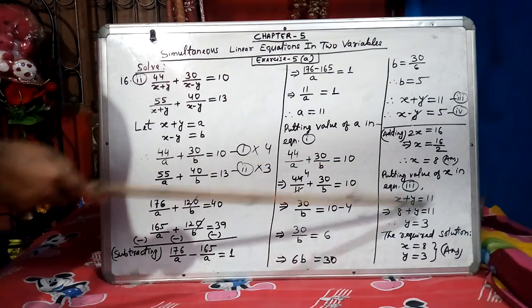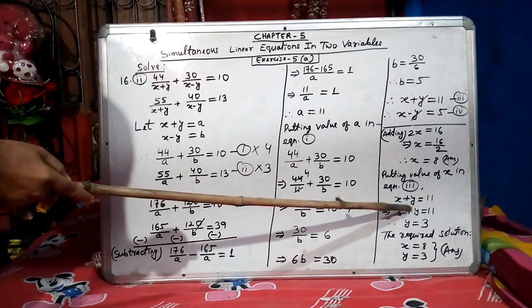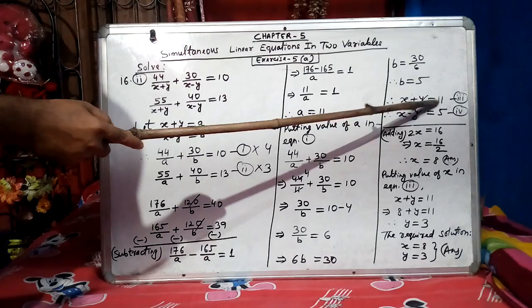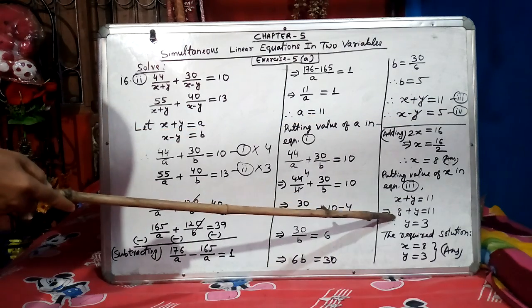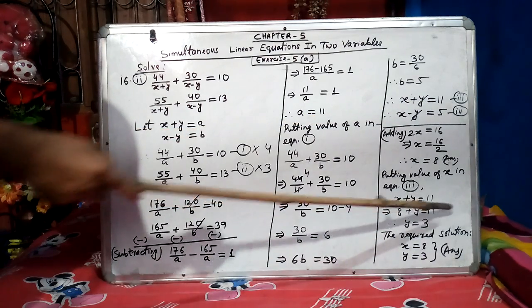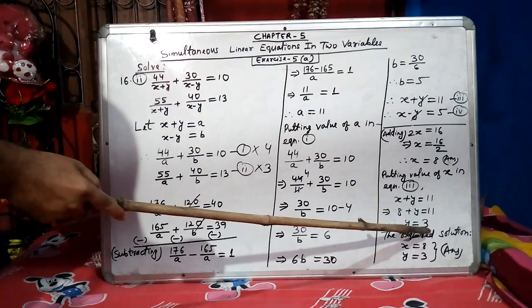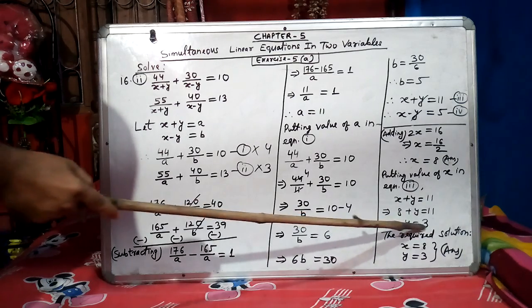Now putting the value of x in equation 3. So in equation 3, we will put the value of x. x plus y equal to 11 is our equation 3. And in place of x, we will put 8. 8 plus y equal to 11. y equal to 3. 11 minus 8 is 3.